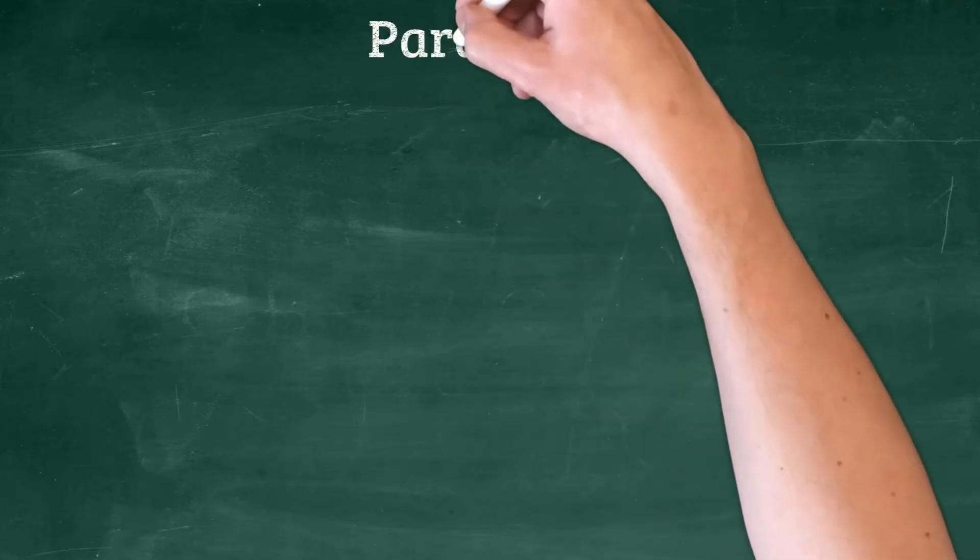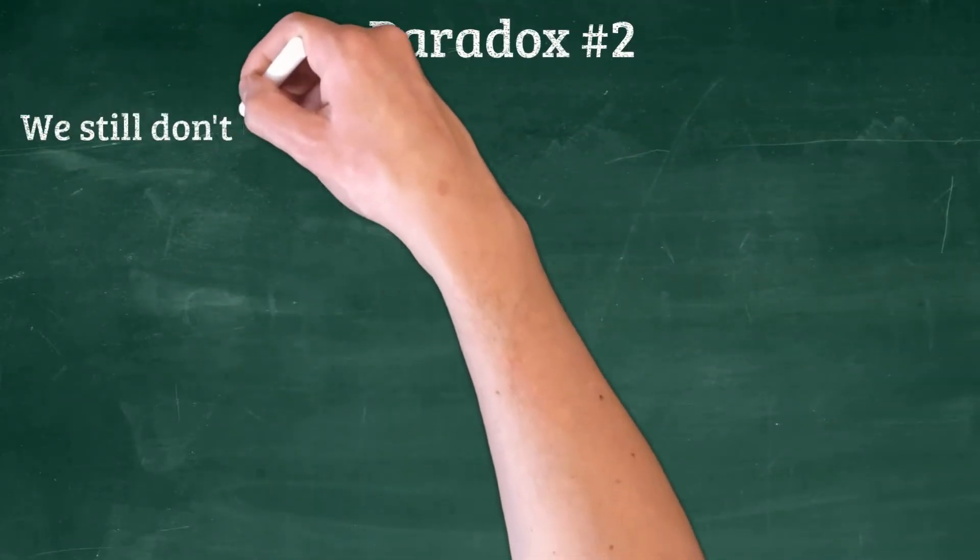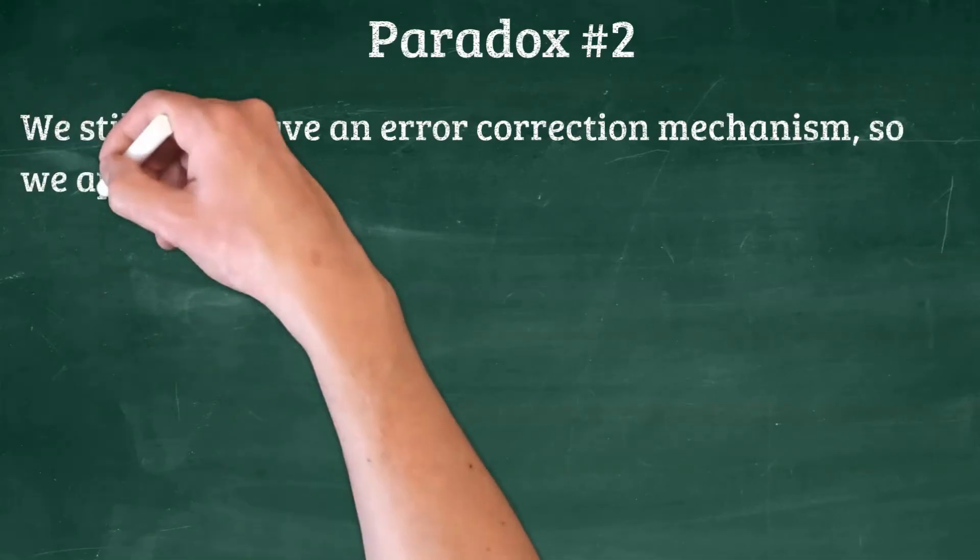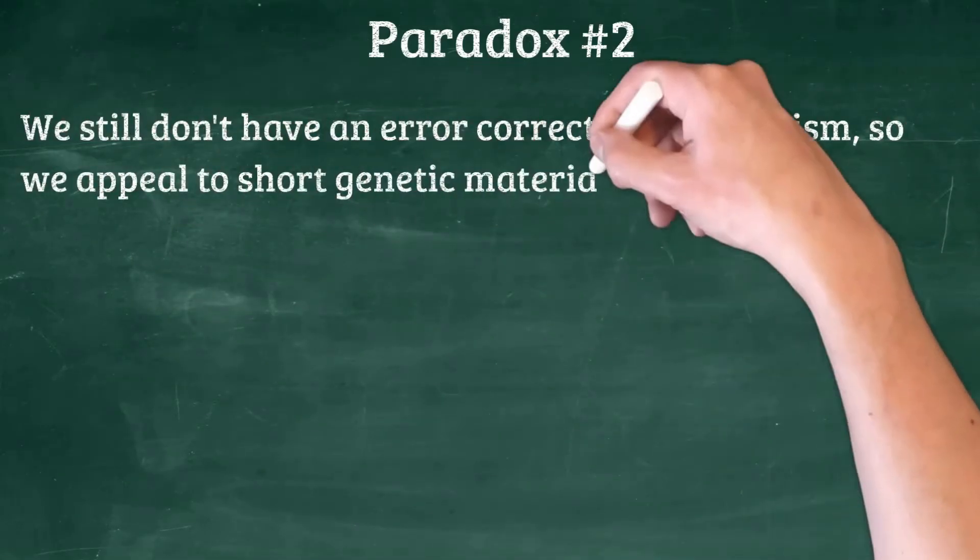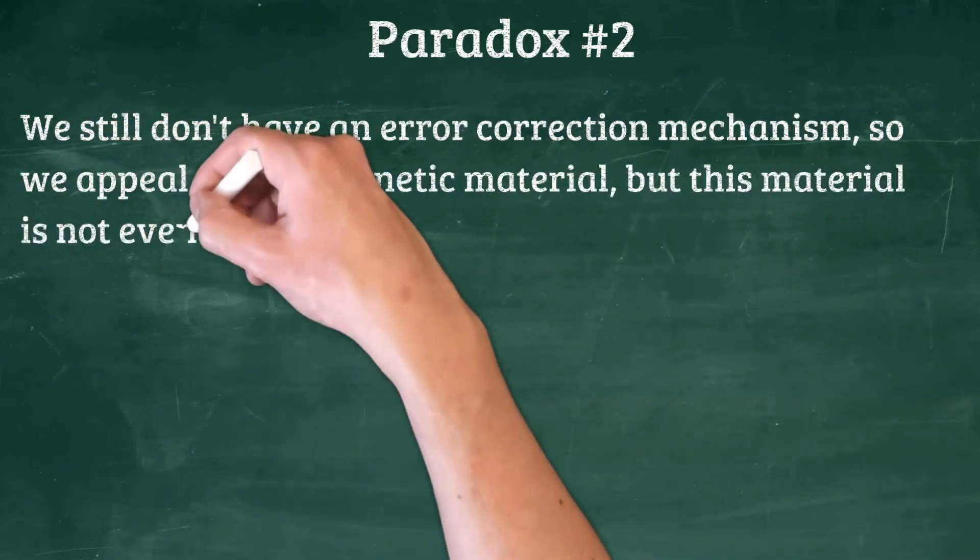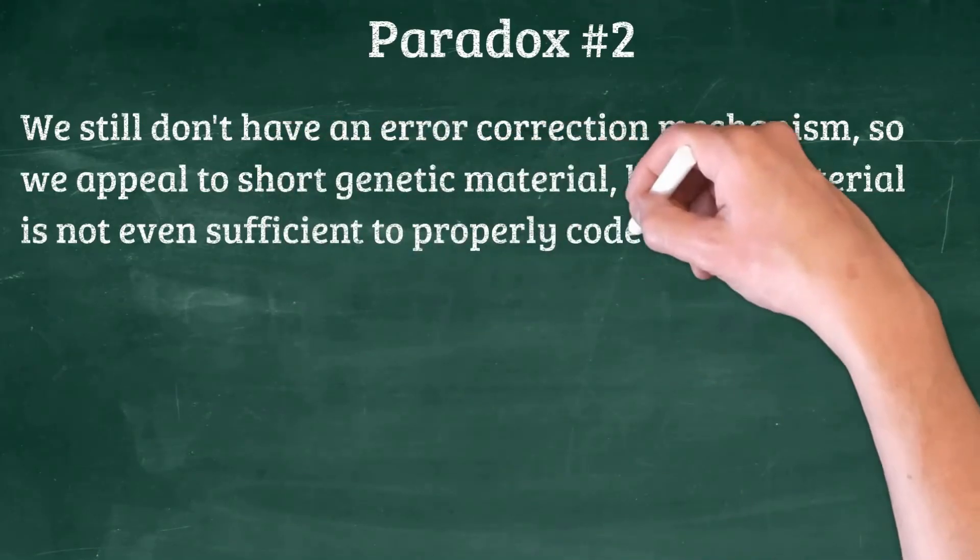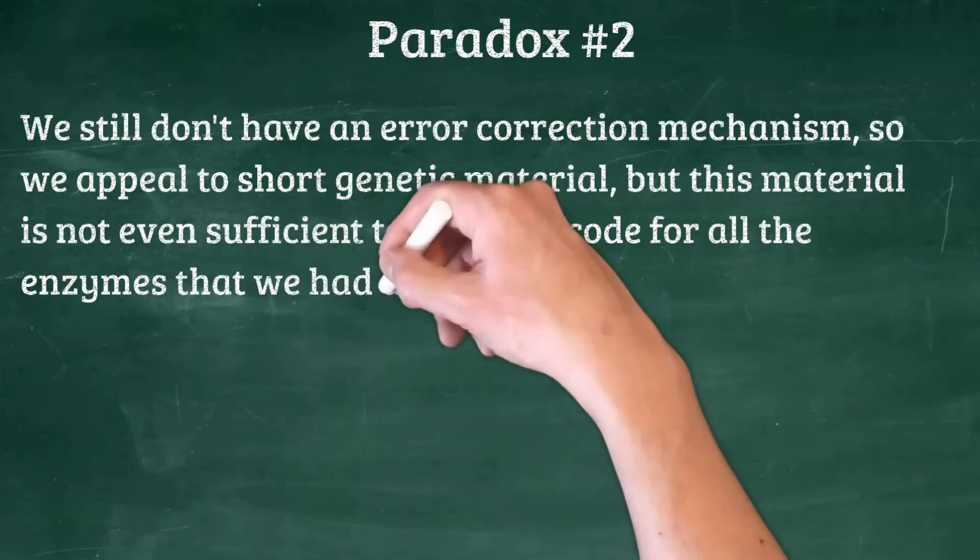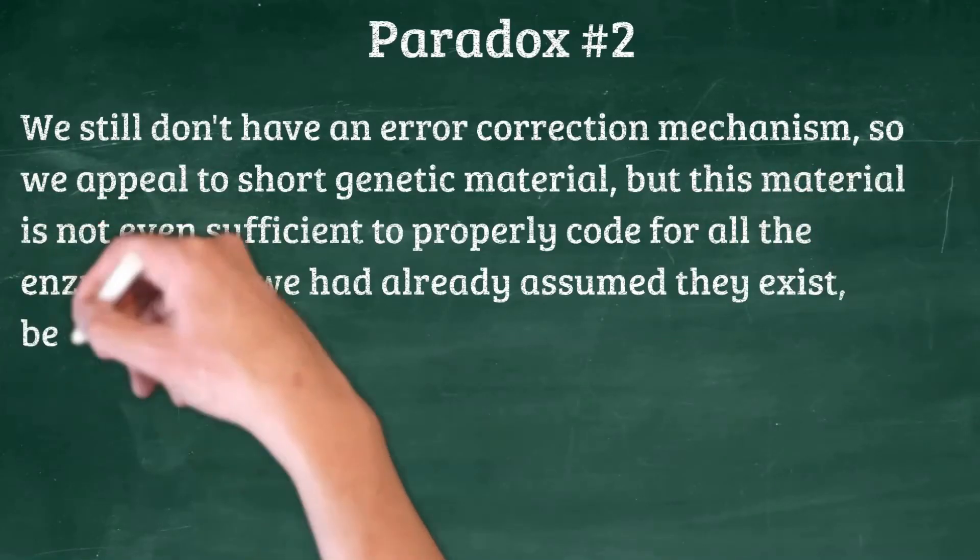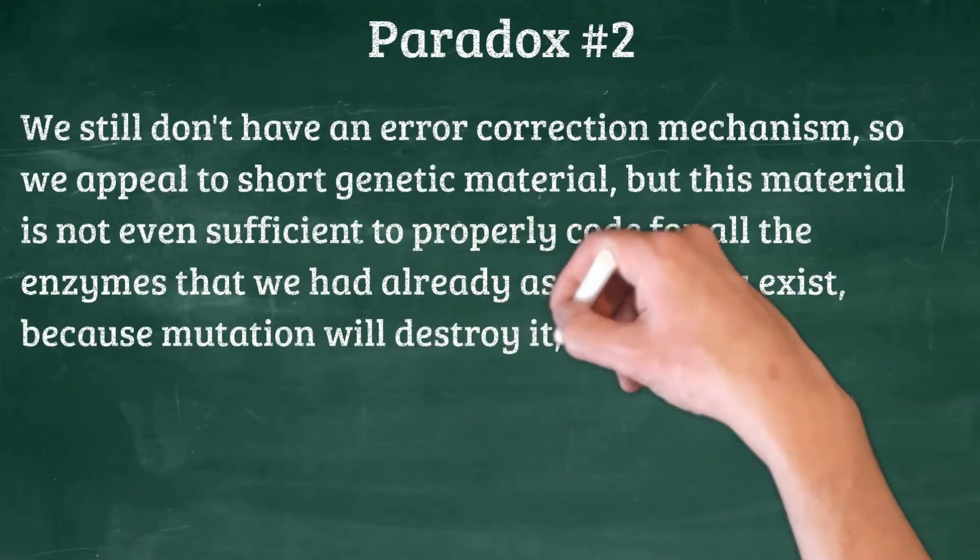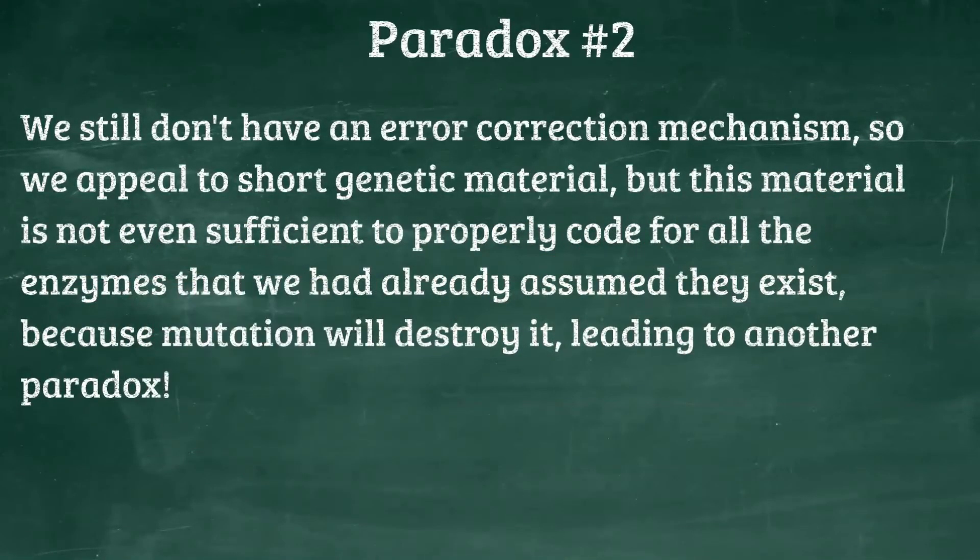Paradox number two: even if we accept RNA replicase, we still don't have an error correction mechanism. Because even with RNA replicase today, a virus will have one million times the mutation rate of its host cell. So even this does not solve it. Because this kind of mutation in an autonomous living cell will destroy it.